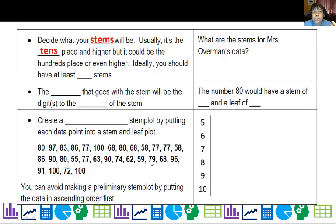So what are the steps to making a stem plot? First, you got to decide what your stems will be. Usually it's a tens place and higher, but it could be a hundreds place or higher. Ideally you should have at least five stems. So what are the stems for my data? My lowest data point was in the fifties, so the tens place there is five, and my high point was a hundred, so the tens place there is ten. So these would make up my stems and you can kind of see them down here, right here in the graph.